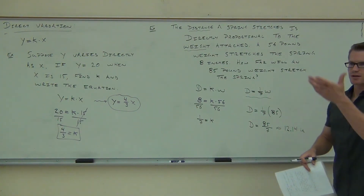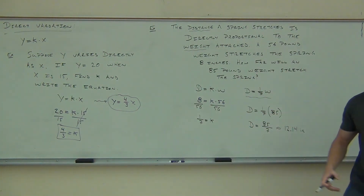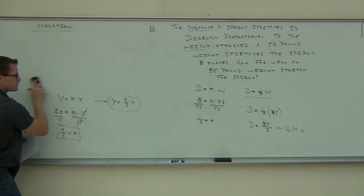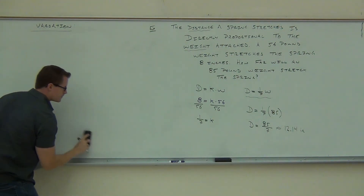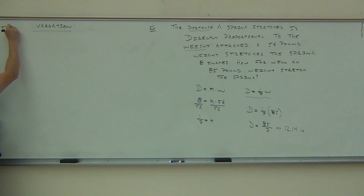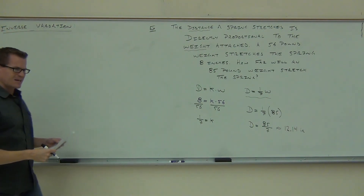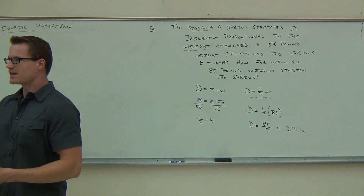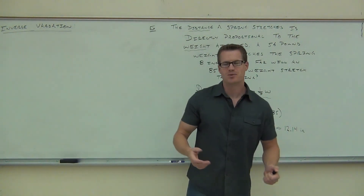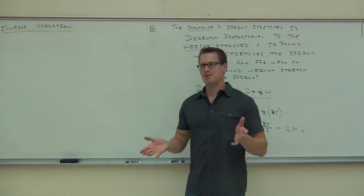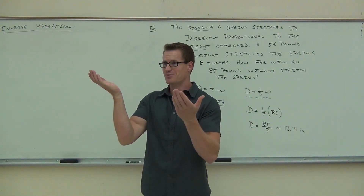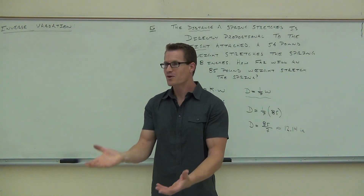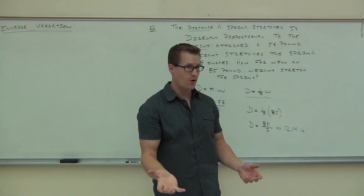We've got direct variation — direct means as one thing goes up, another thing goes up. As the weight goes up, the stretch goes up. There is another type of variation we have to talk about though: inverse variation. What do you suppose inverse variation means? The opposite — if one thing goes up, the other thing goes down. For instance, if I spend more time in a casino, I have less money. The more time you spend there, the less money you have.